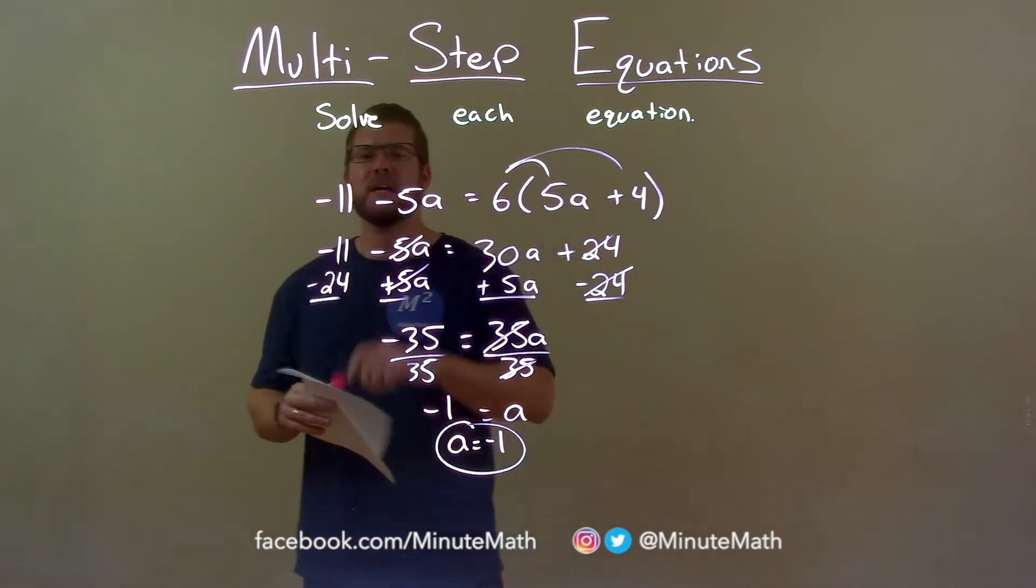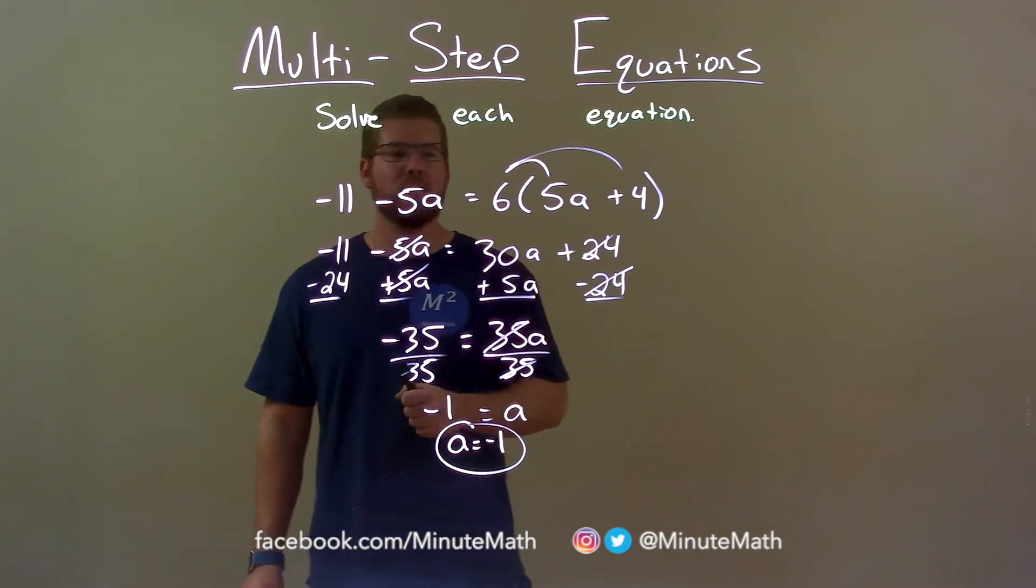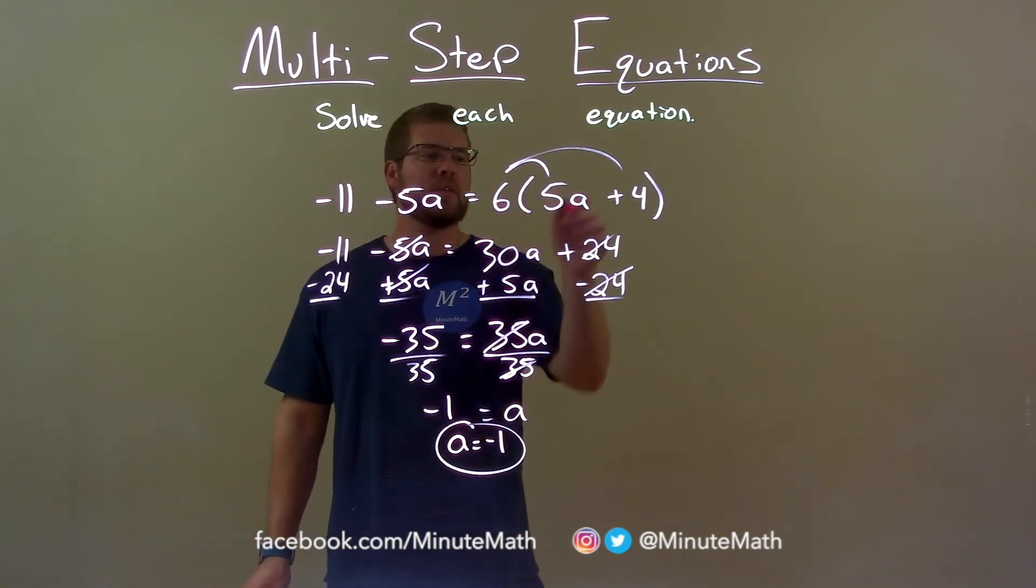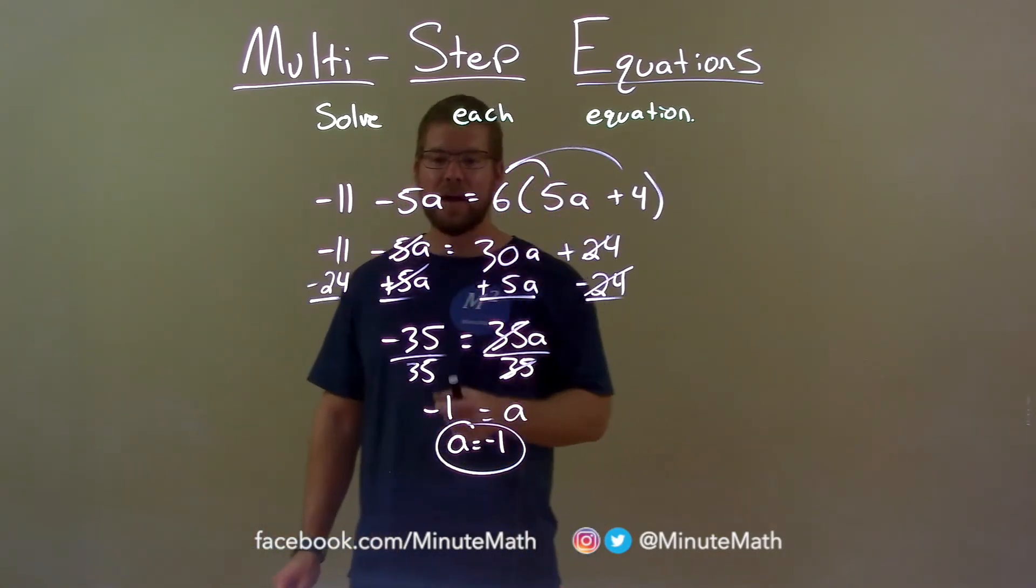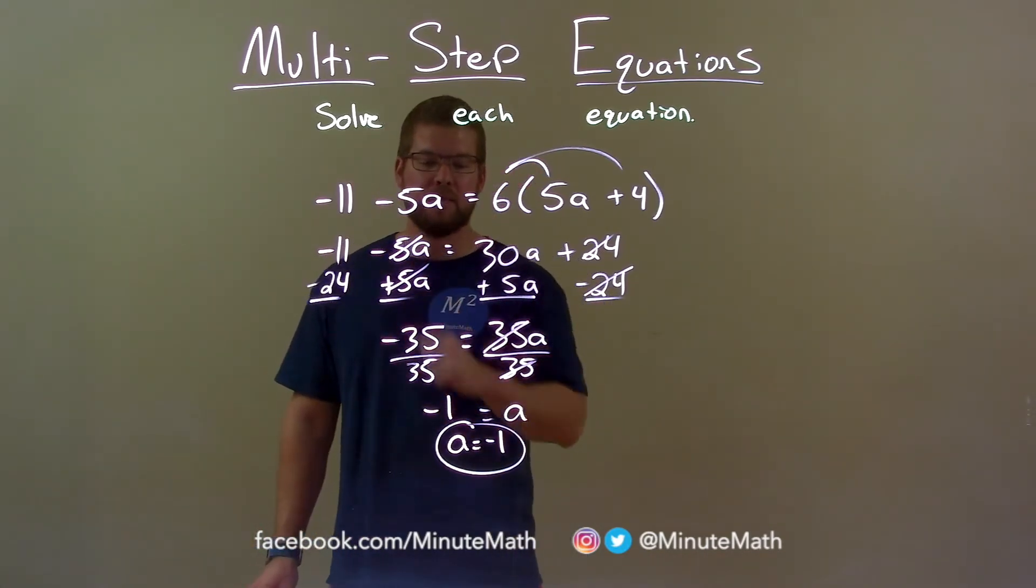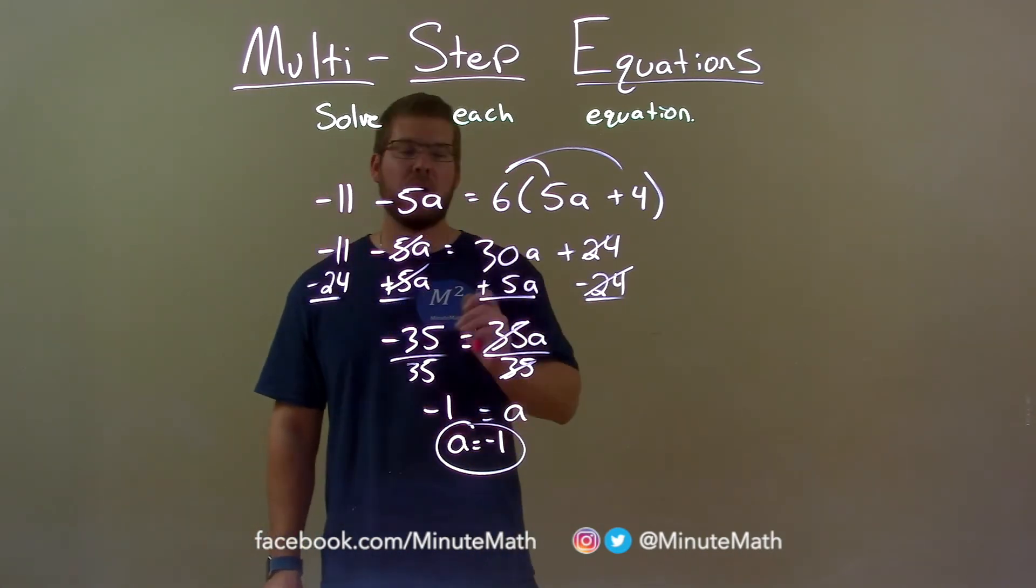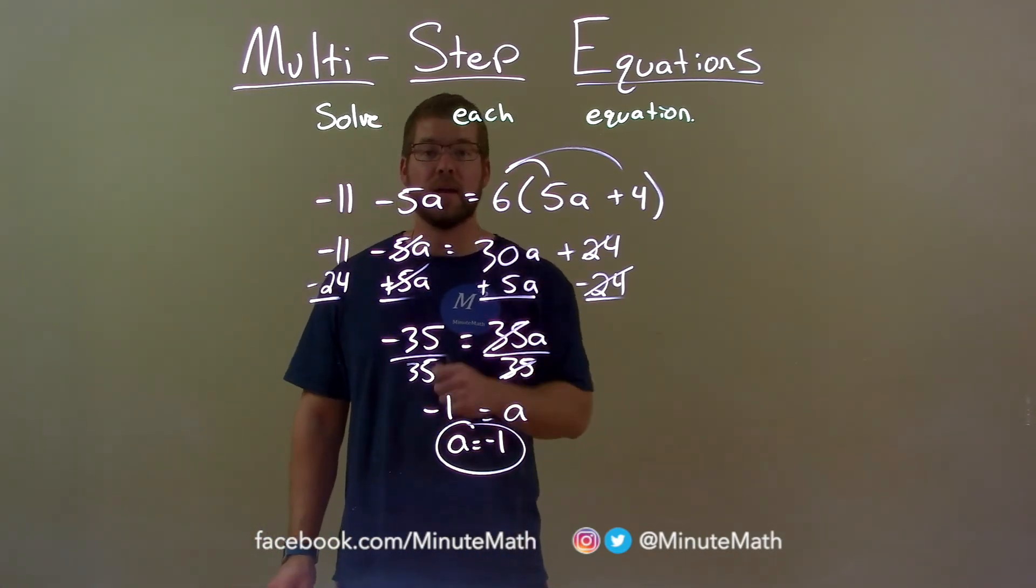Quick recap, we're given negative 11 minus 5a equals 6 times 5a plus 4, and we have to solve for a. I distribute the 6 into my parentheses, then I combine my like terms. Variables to the right, numbers to the left. Negative 35 now equals 35a. Divide both sides by 35, and now a is by itself, and it's equal to negative 1.